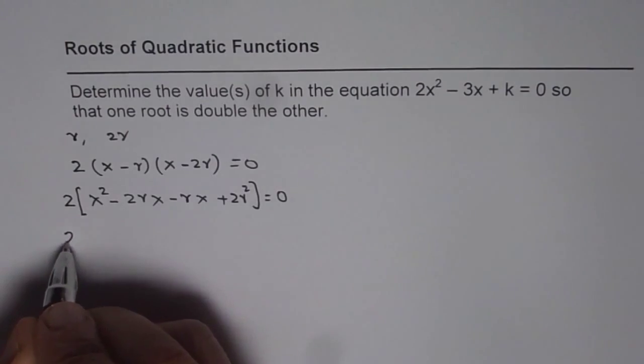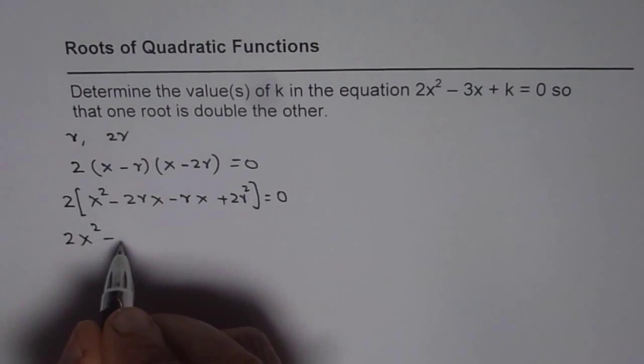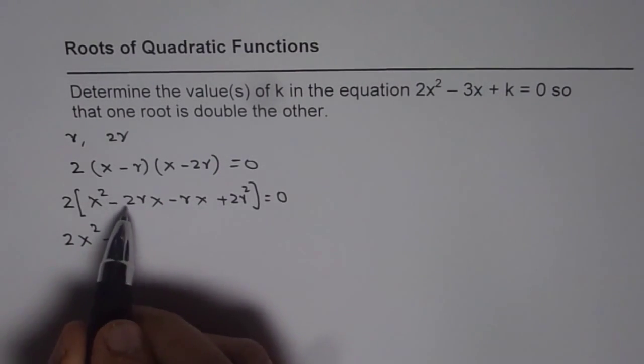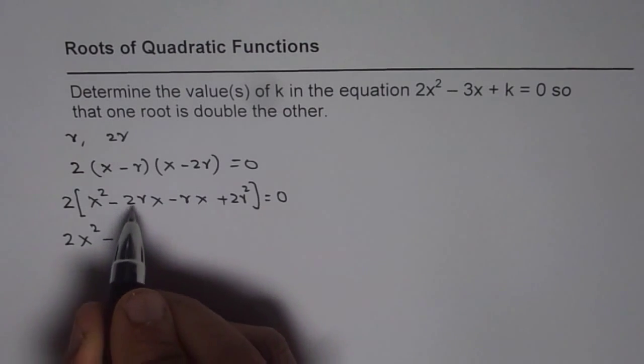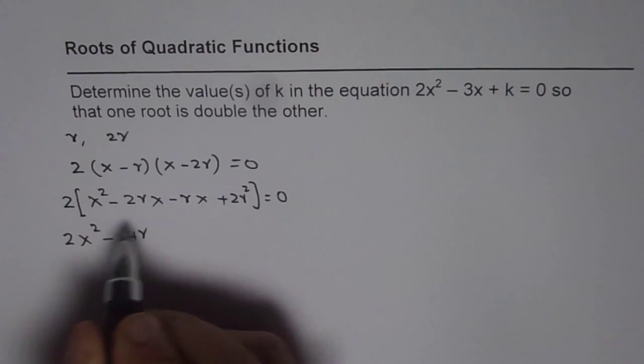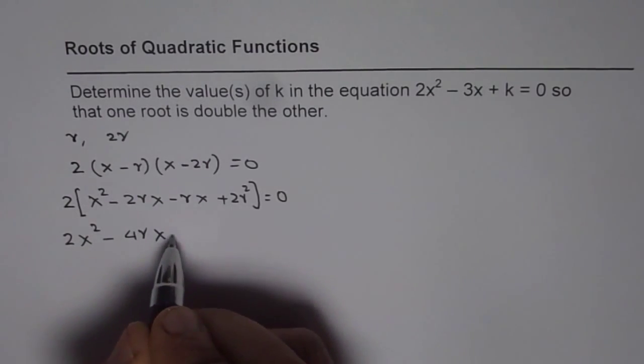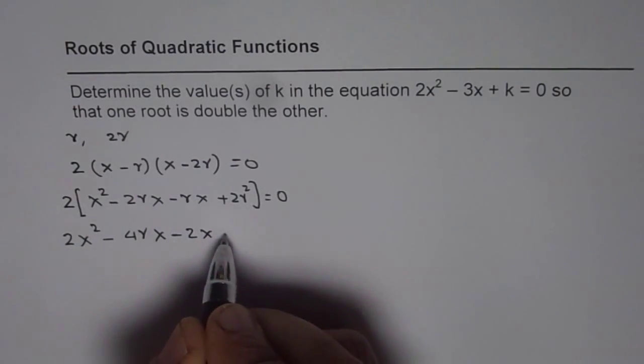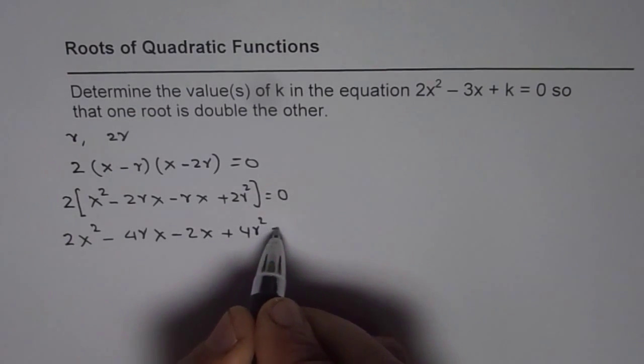Let us expand. We get 2x squared minus, let me first write this as minus 4. I could combine and write 6 also. So, anyway, we will do it in two steps. Plus 4r squared equals to 0.